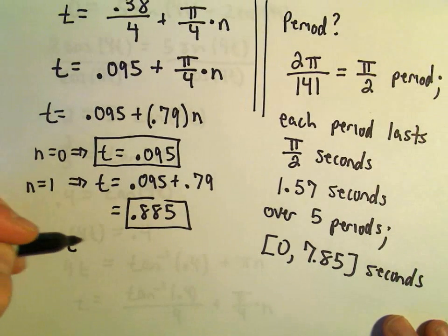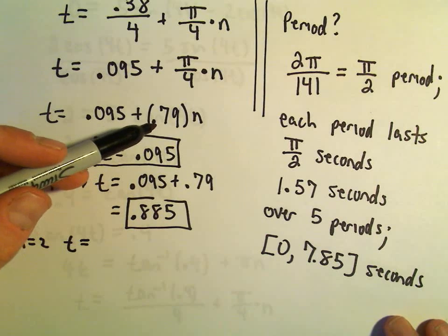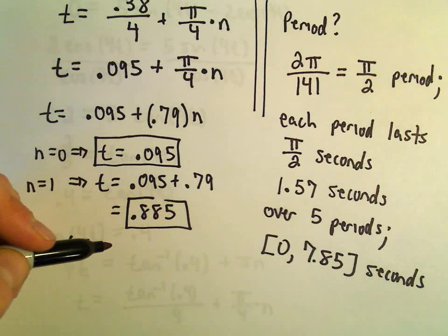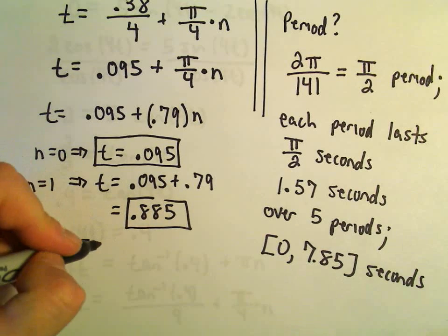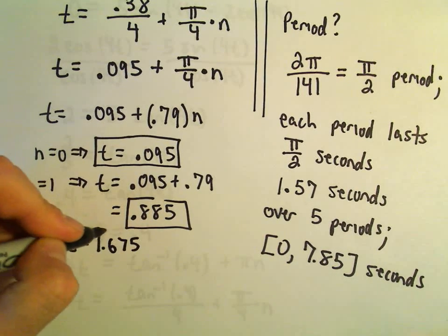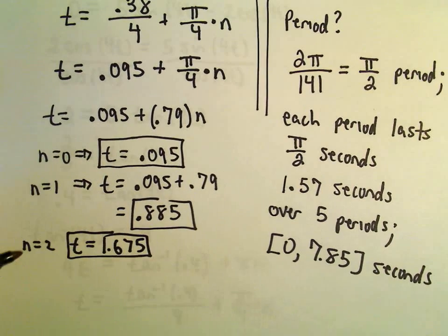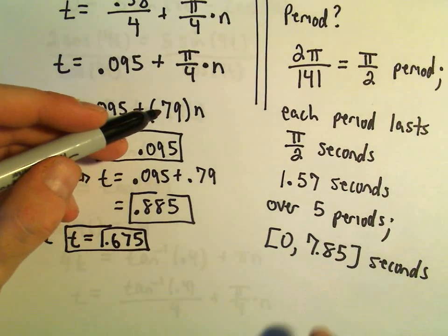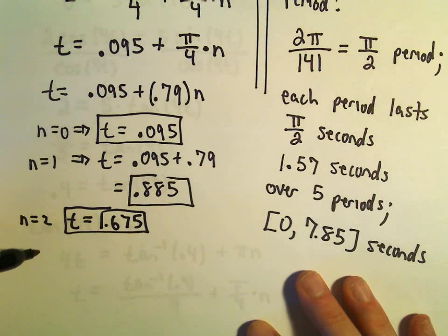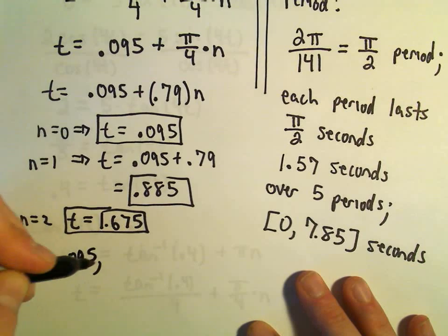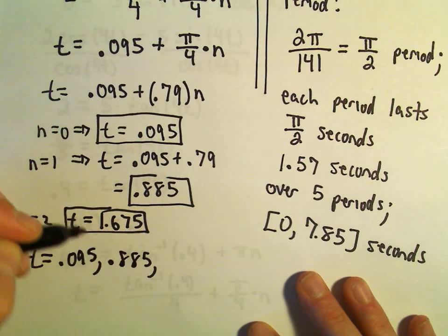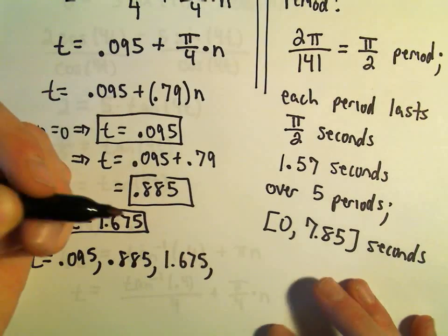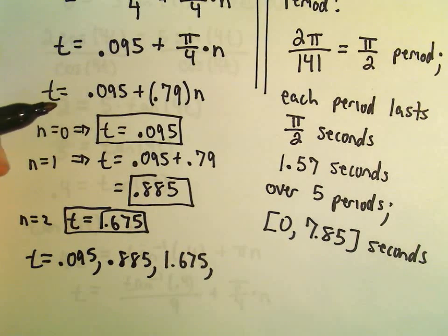If n equals 2, all we're doing is just adding another multiple of 0.79. So 0.885 plus 0.79, I'm getting that to be 1.675. And now I'm just going to keep adding 0.79 until I get outside of this interval. So we'll have quite a few solutions here. We said 0.095 works, we added 0.79 to get 0.885, that's another one that works. 1.675, that's another one that works.